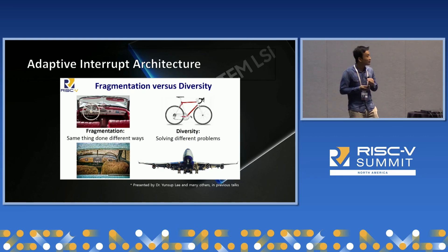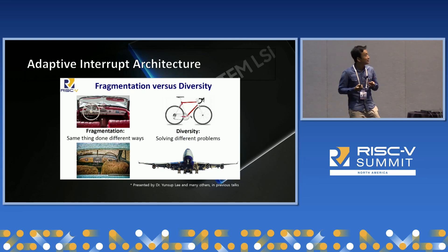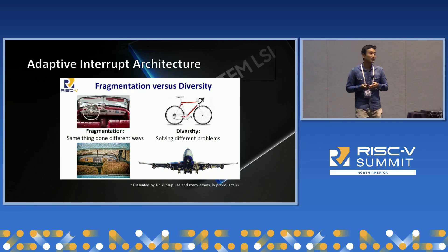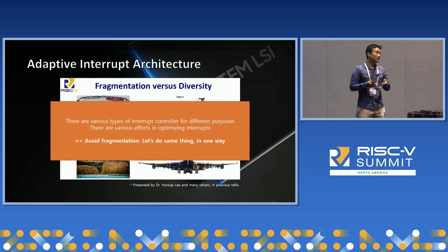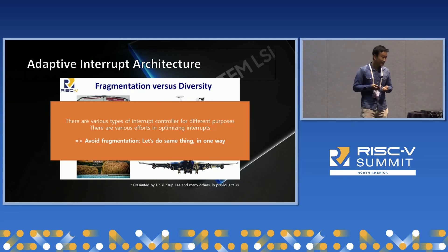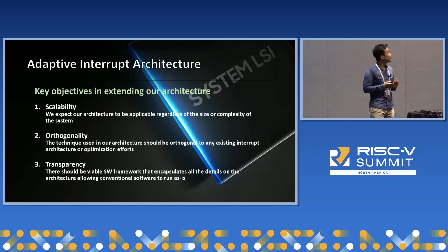This next slide was something presented by Dr. Yeon-seom Lee many years ago, and I was very much inspired by this picture. It was the answer to the question: how will RISC-V as an open-source ISA deal with fragmentation issues? It denotes that we call it fragmentation when we are solving the same problem in different ways, which RISC-V wants to avoid. RISC-V is tending toward diversity where it tries to solve new hard problems in an effective way. So going back to the question: optimizing interrupt services is a very common problem dealt with throughout multiple architectures and with a lot of hardware optimization techniques. If we just go with a very localized solution for our application, we believe this is fragmentation which we have to avoid.